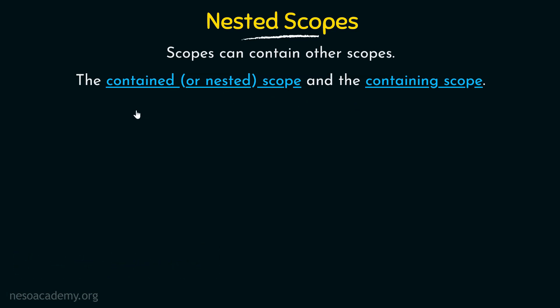The contained or nested scope is the inner scope, and the containing scope is the outer scope. On the outside we have a scope, and within that outer scope we have another scope which is the inner scope. The outer scope is known as the containing scope, and the inner scope is known as the contained or nested scope.